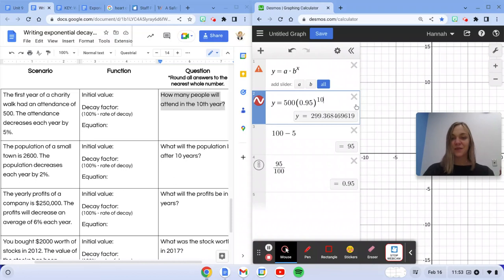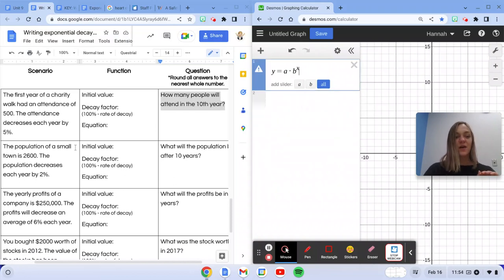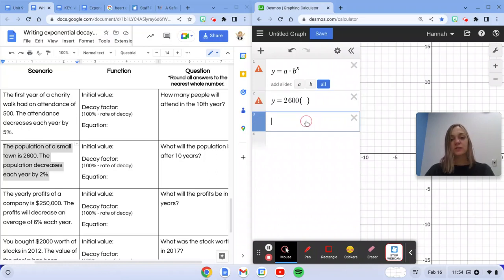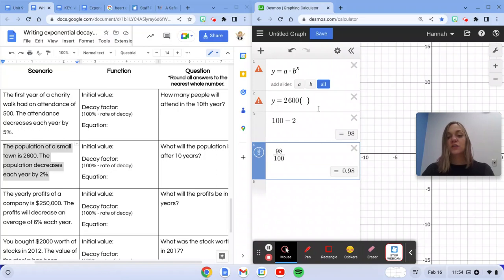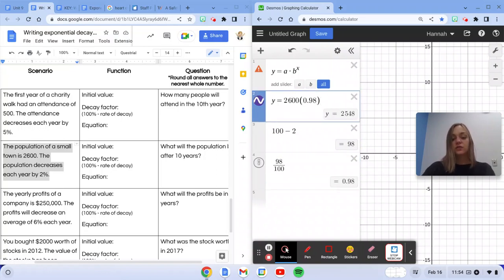Let's do another one together. The population of a small town is 2,600. So that's going to be my starting point. The population decreases each year by 2 percent. So I've got 100 and I'm subtracting out 2 percent to get 98 percent remaining. That's going to be my decay factor. Making that into a decimal, we get 0.98 to the x. So we've got our equation now.